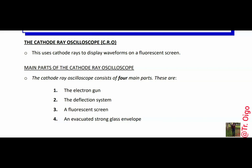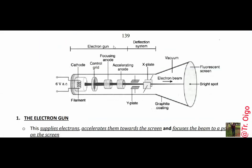I'm providing a diagram to show this particular figure known as the cathode ray oscilloscope. It has the four parts that we mentioned. There is the electron gun, and the electron gun consists of the cathode, the grid, the focusing anode, and the accelerating anode. The deflection system consists of the y-plates and the x-plates, and the fluorescent screen is where that particular spot is displayed.